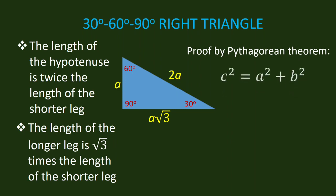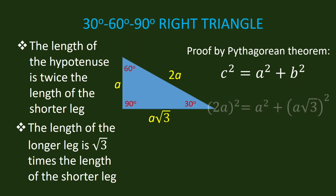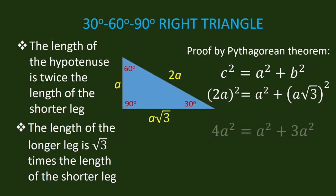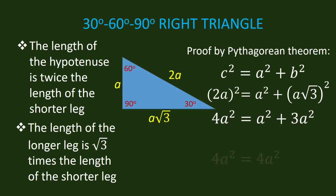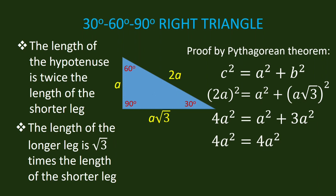The Pythagorean theorem is C squared is equal to A squared plus B squared. Let us substitute the given sides of our triangle. Examine closely how the equation is simplified. And the result is 4A squared is equal to 4A squared. This is a true statement. Therefore, we are able to see that this theorem is correct.